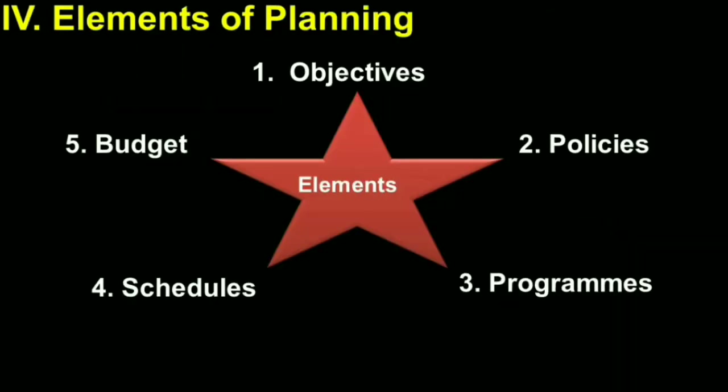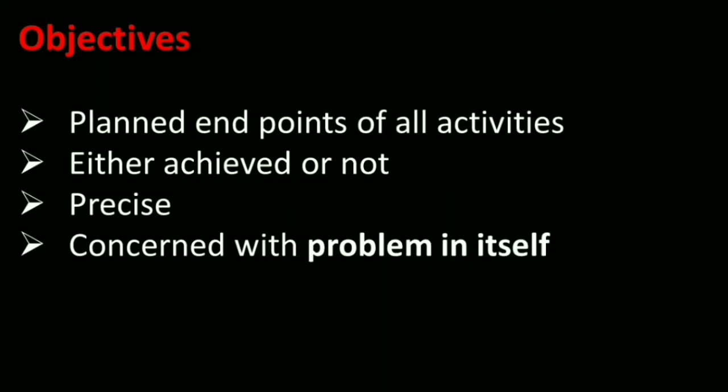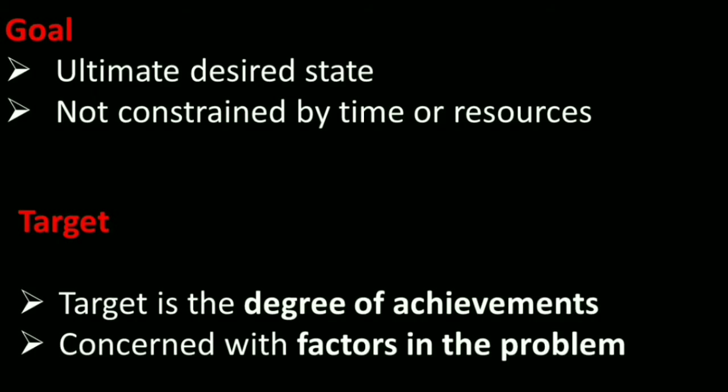There are five elements or components in planning: objectives, policies, programs, schedules, and budget. Key terminologies: objectives are planned end points of all activities — either achieved or not — and are precise and concerned with the problem itself. A goal is the ultimate desired state, not constrained by time or resources. A target is the degree of achievement concerned with the factors in the problem.